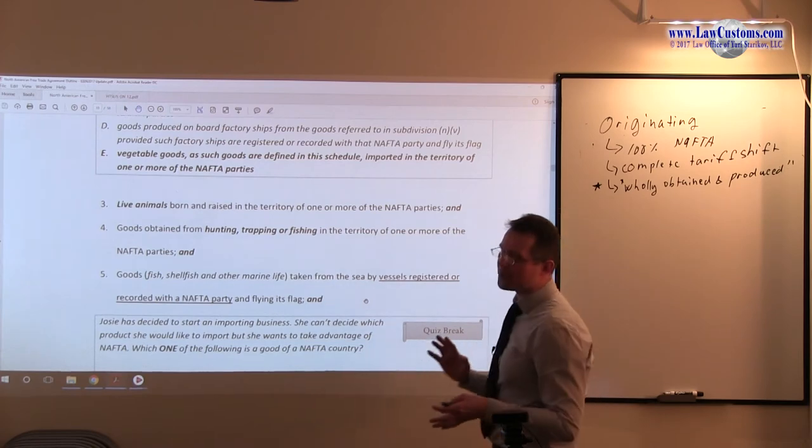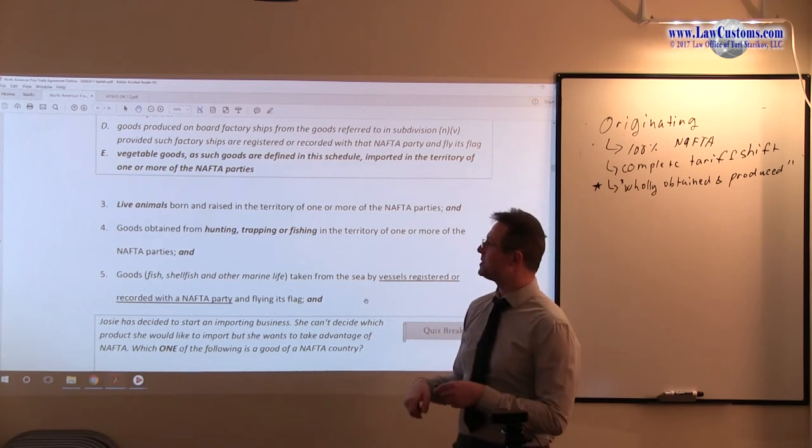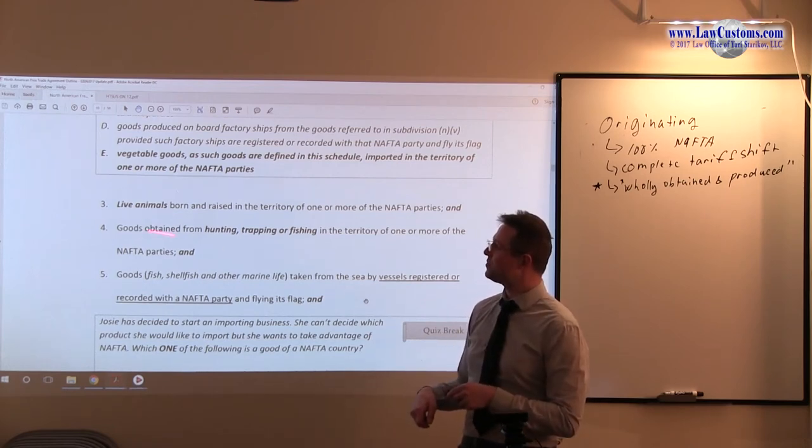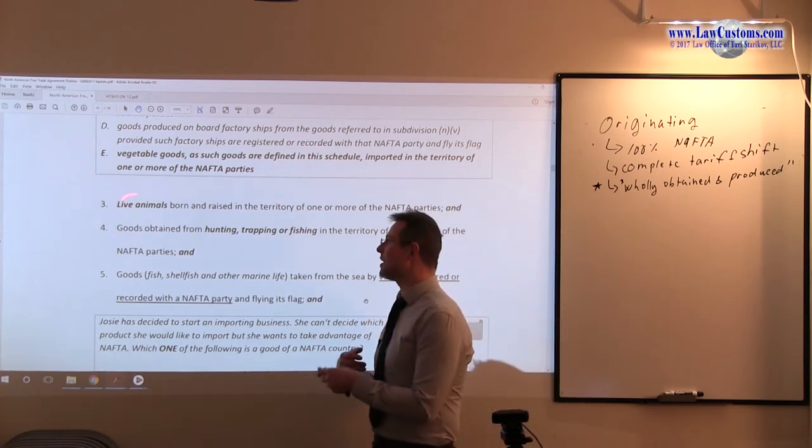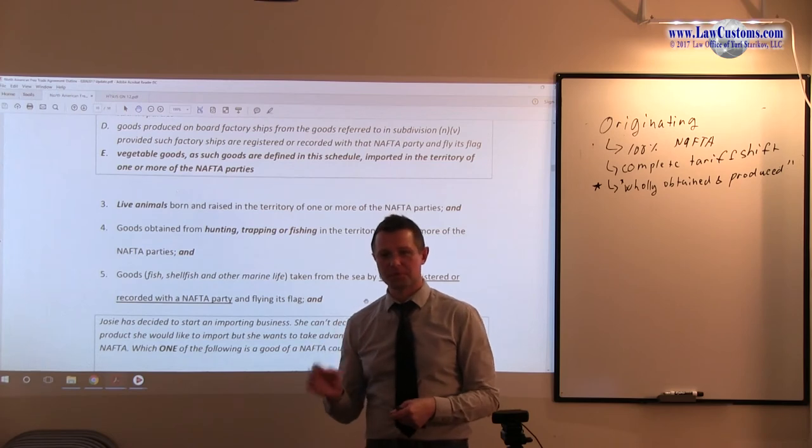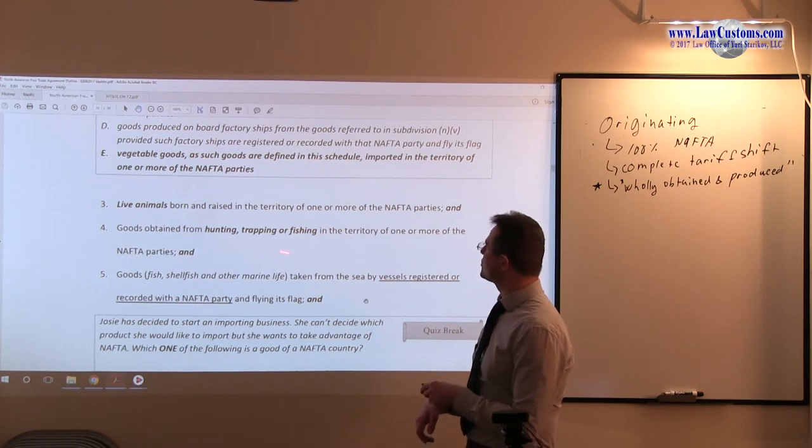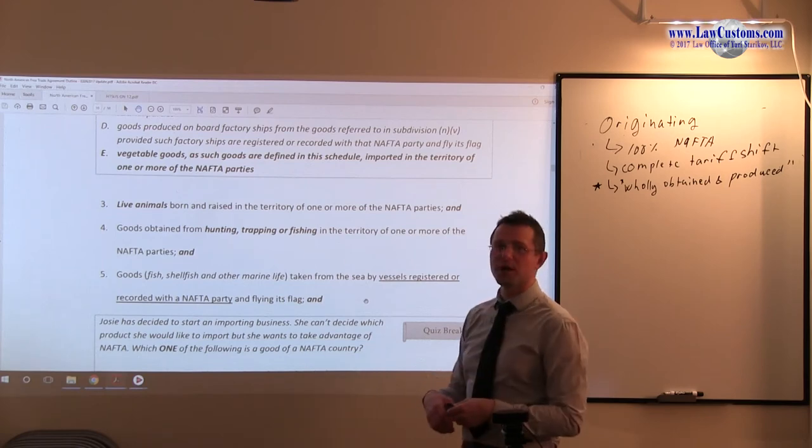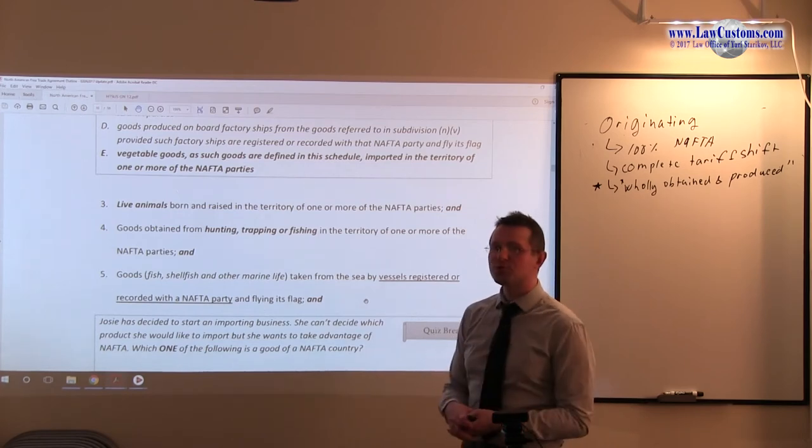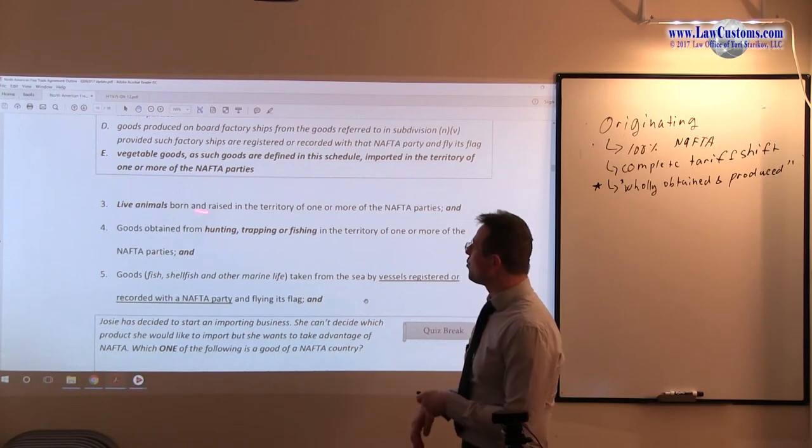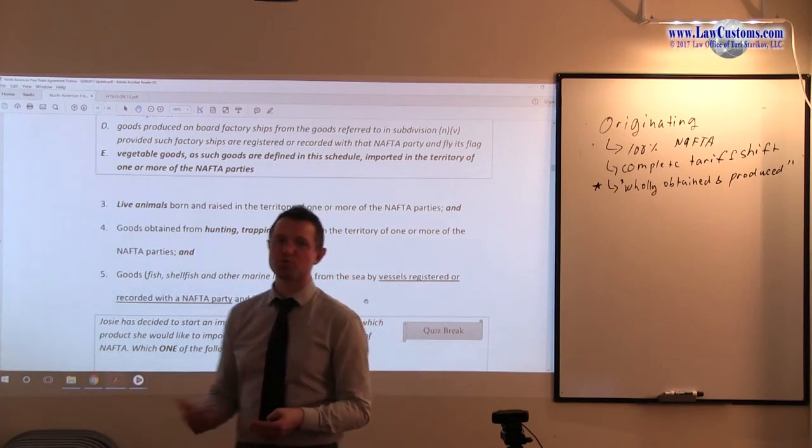A little clarification also. Live animals can also be obtained by hunting. But I think over here, the point is domesticated live animals. Even though they don't say that, this is the implication. Because if you go for the wild animal, which let's say you got it from state of Chiapas in Mexico, how do you know that it was born and raised in the territory of Mexico? Maybe it was in Guatemala. It just crossed the border. Wild animals do not know the national borders.